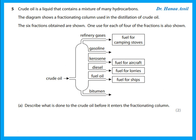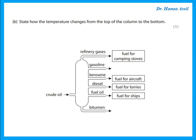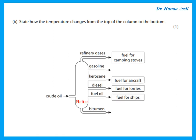Question 5: crude oil is a liquid that contains a mixture of many hydrocarbons. The diagram shows a fractionating column used in the distillation of crude oil. Describe what is done to the crude oil before it enters the fractionating column — before it enters, we are heating it until it vaporizes, so it is heated and vaporized until it becomes a vapour and then goes into the fractionating column. State how the temperature changes from the top to the bottom — the bottom part is hotter, so going from top to bottom the temperature increases.